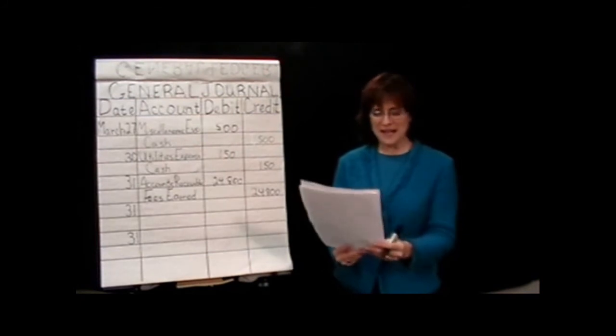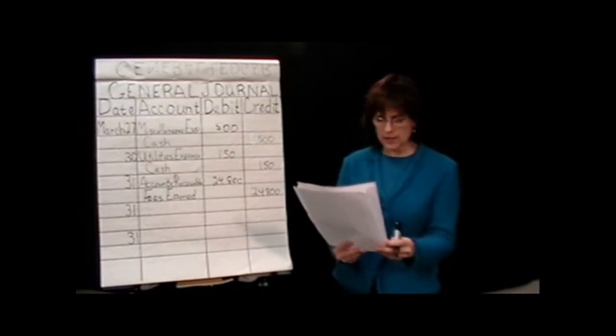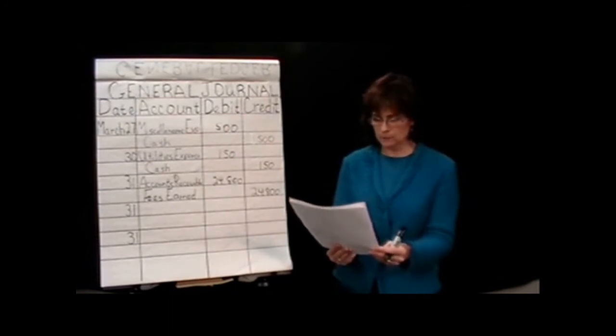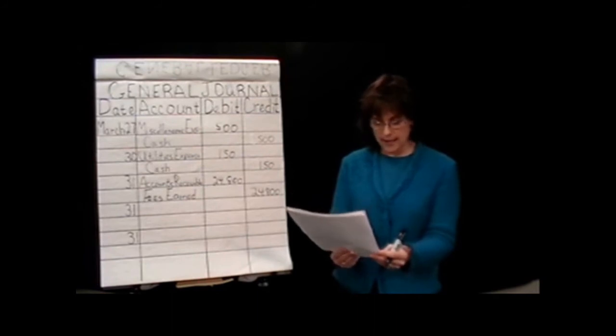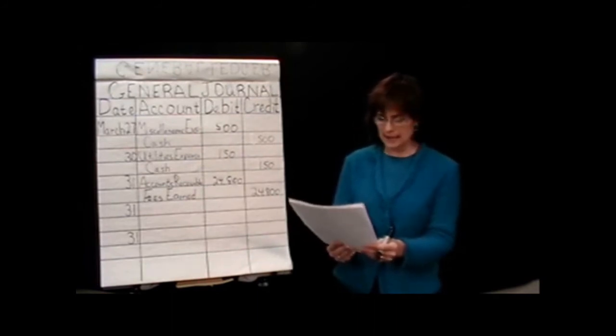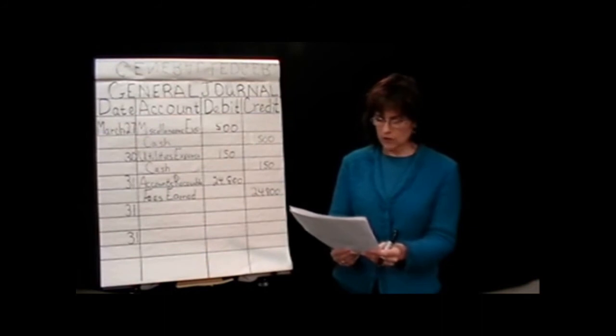All right. Going on down to the next thing where it's the end of the month. We're paying our bills. It says we paid electricity for the month of $450. Again, look, we see that we're paying here. Anytime we pay, we use cash. Cash is an asset, and it is decreasing. So if it's decreasing, we're going to be crediting it. But if you remember, our debits go first. What account would we use when we pay electricity?